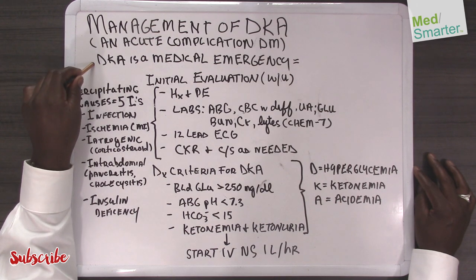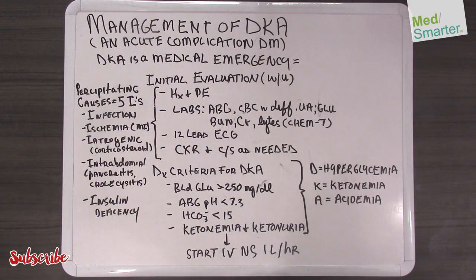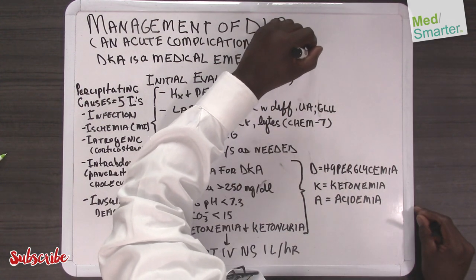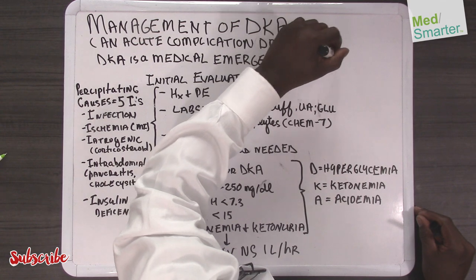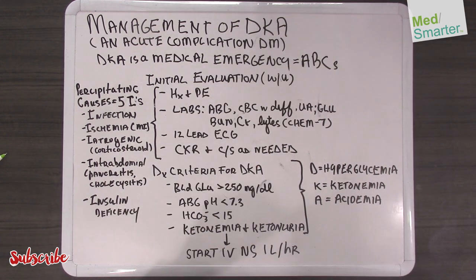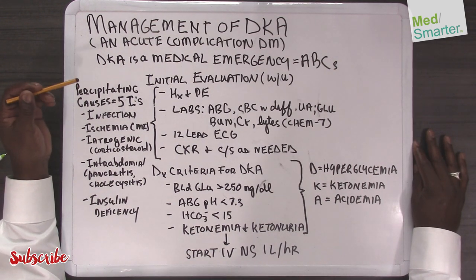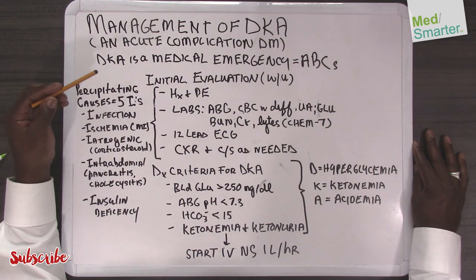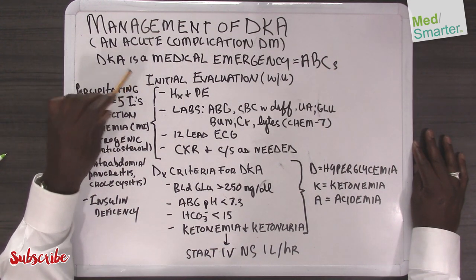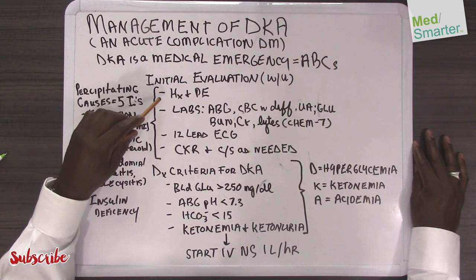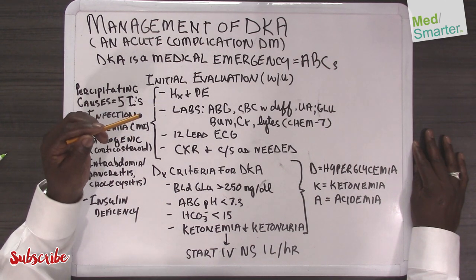DKA is in fact a medical emergency, so that means the first priority is going to be your ABCs. The person presents to the emergency room and you will start out your management with an initial evaluation or workup that includes a thorough but rapid history and physical examination.